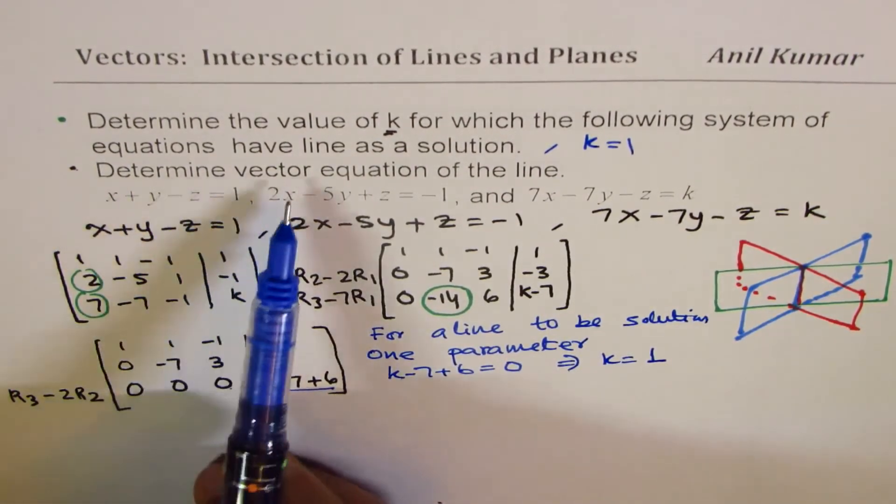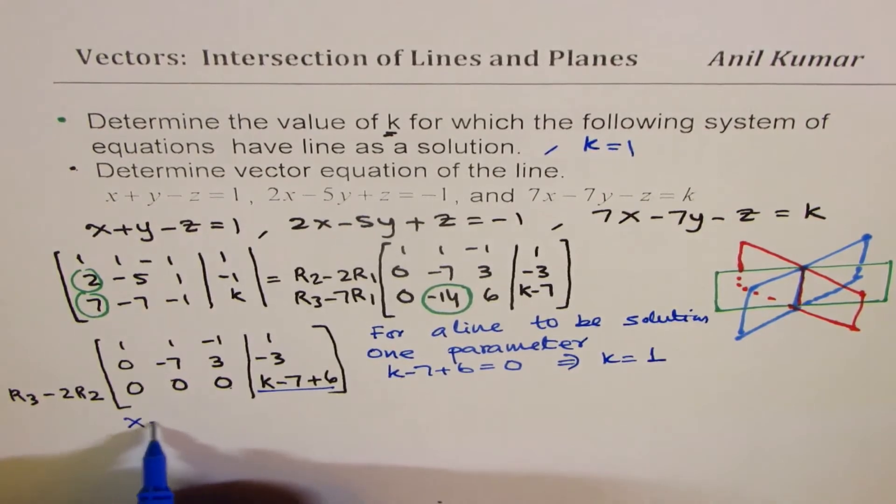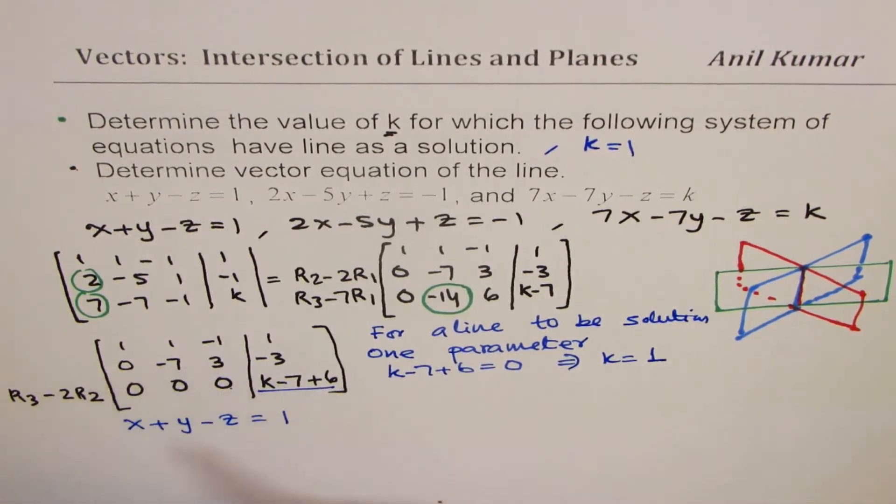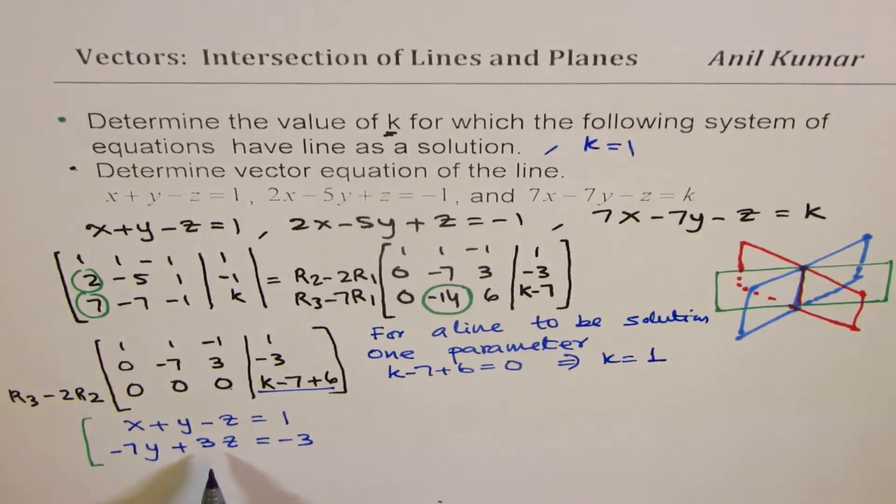Now, let us do part 2, which is determine vector equation of this line of intersection. Now, if k is 1, we get 0 here. So in that case, the three equations will be, the first one can be written as x plus y minus z equals to 1. The second one could be written as minus 7y plus 3z equals to minus 3. So these are the two equations to solve. Now, to solve these equations, what you can do is, you have to assume a parameter. So, what we can do here is that we can write z as 7t, for example. So if I write z equals to 7t, the parameter 7 times t, idea is to avoid fraction. To avoid fractions. Do you see that? I could use t also.